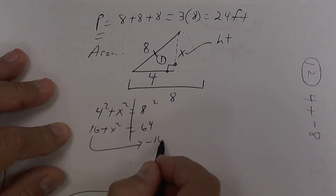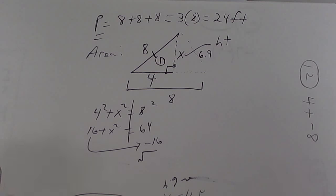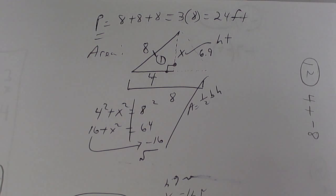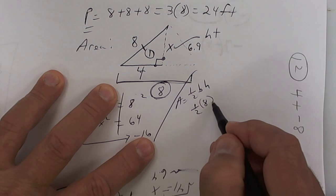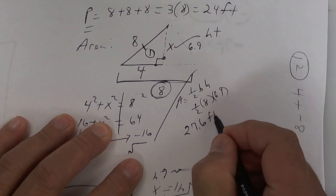We're going to subtract 16, and then we're going to take the square root. So on the calculator, press 64 minus 16, hit equals, hit Shift, hit square root — I get 6.9. So the height is about 6.9. Now to get area, you're going to say area equals one-half base times height. The whole base was 8, and we know the height is 6.9. Press 6.9 times 8, press equals, and divide by 2 — I get 27.6. So on my test I would put 27.6 square feet.